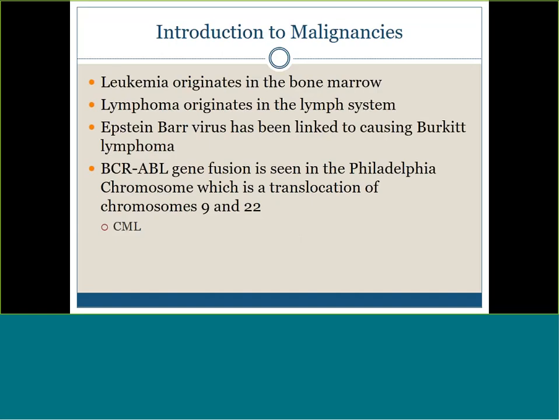From week two, we introduced malignancies. Leukemia versus lymphoma is just about where it began — leukemia starts in the bone marrow, lymphoma starts in the lymph system. The Epstein-Barr virus is well-linked to causing Burkitt lymphoma. Regarding chromosome translocations, know the BCR-ABL gene fusion — two oncogenes fused together creating a translocation of chromosomes 9 and 22, called the Philadelphia chromosome, responsible for CML — chronic myelocytic leukemia — in 95% of cases.